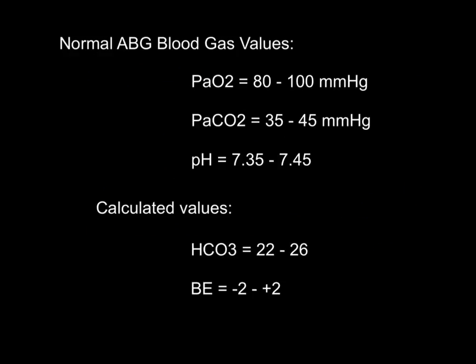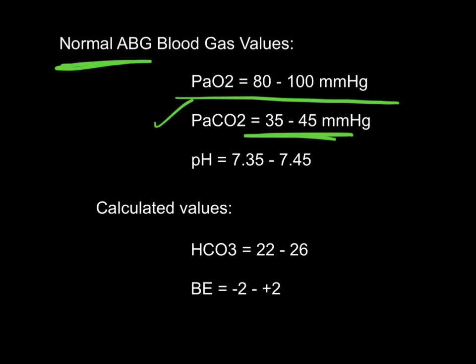Before we can talk about vector analysis, we have to know about normal arterial blood gases. We know that a normal PO2 in arterial blood delivered from the heart is about 80 to 100 millimeters of mercury. But we're going to focus on CO2, which is about 35 to 45 millimeters of mercury in our normal blood gas, and a pH of about 7.35 to 7.45. We're going to look at this interrelationship to determine the difference between respiratory or ventilatory components and metabolic components in the blood gases.